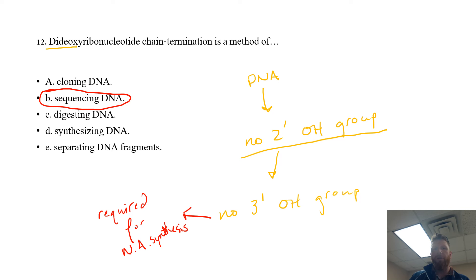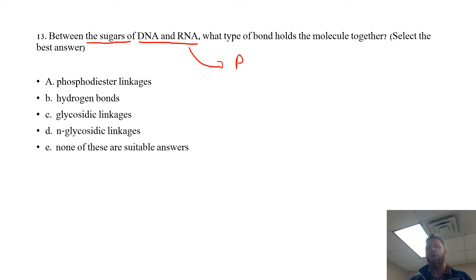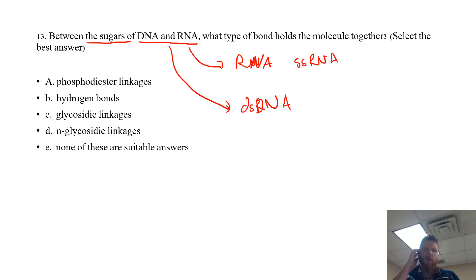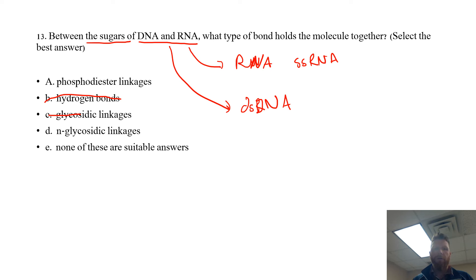Between the sugars of DNA and RNA, what type of bond holds the molecule together? This question asks specifically about the sugars. RNA is generally single-stranded; DNA is double-stranded. Are we using hydrogen bonds? No — hydrogen bonds hold the nitrogenous bases together. Glycosidic linkages hold sugars together, but not in this case, because what we have between them is a phosphate group. So that takes glycosidic linkages and N-glycosidic linkages off the table, leaving us with phosphodiester linkages or phosphodiester bonds.